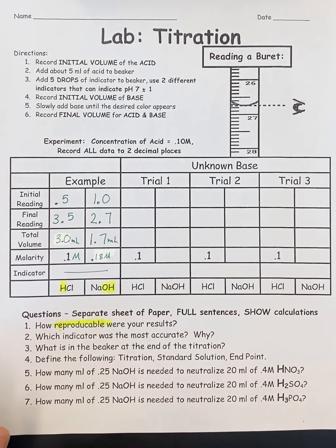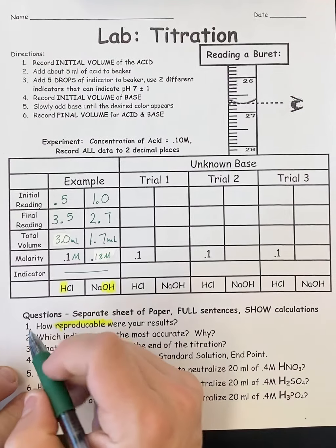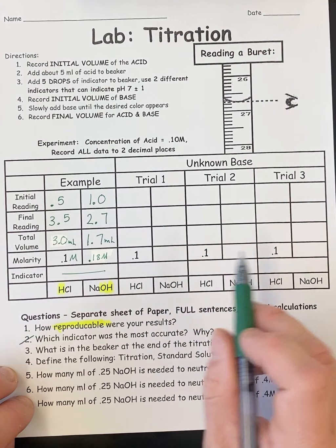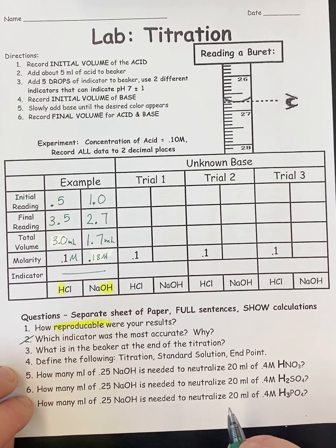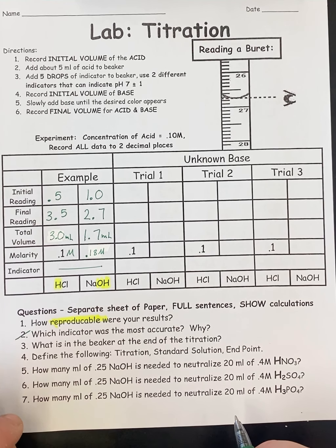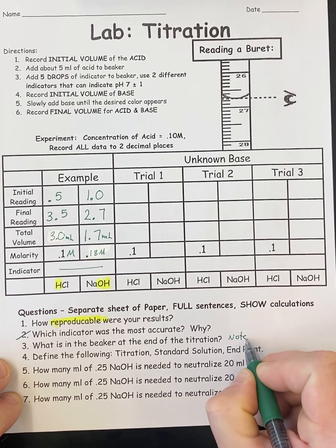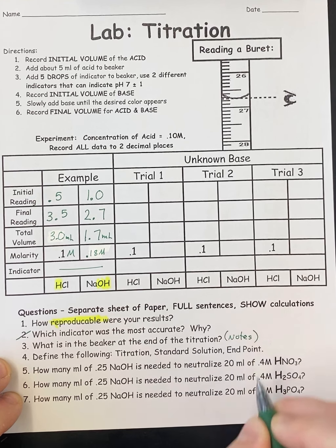Which indicator was the most accurate? We're not going to do this question because we didn't use indicators for the virtual lab. When we do this in person, we will use three different indicators for the three different trials. What's in the beaker at the end of the titration? If you go to your notes, that information is all there.